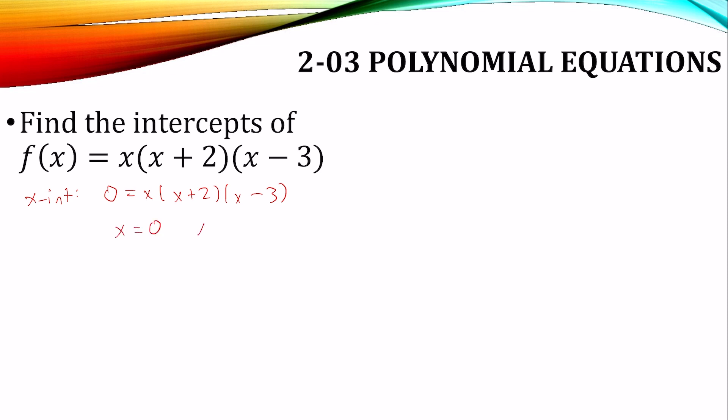And since they're all multiplied together, we can use the zero product property and just make each of the factors equal to zero. And solve for each of those. So you can see the x-intercepts are 0, -2, and 3.